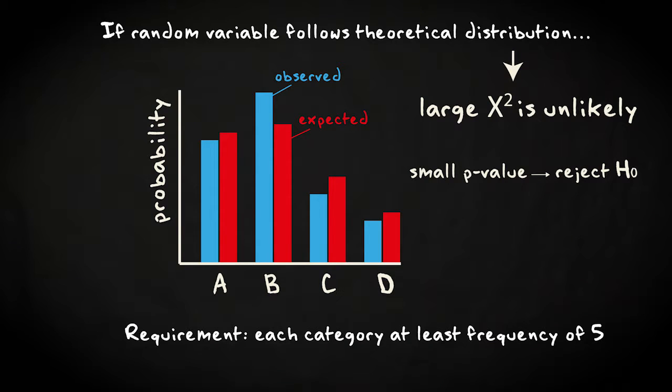A requirement for the application of the chi-squared statistic for goodness of fit is that for each category i, the expected frequencies need to be 5 or more.